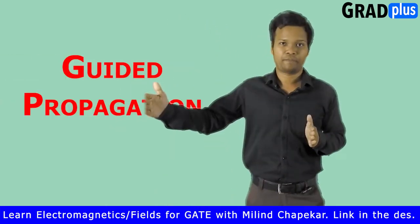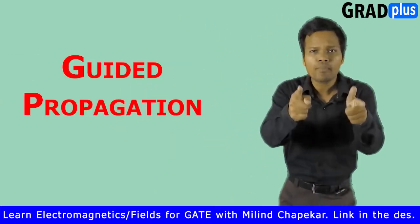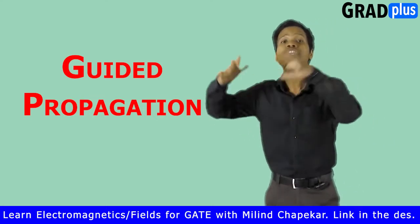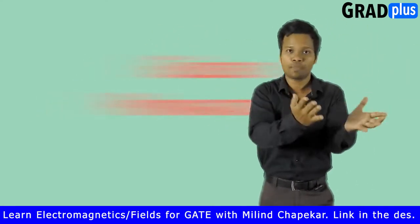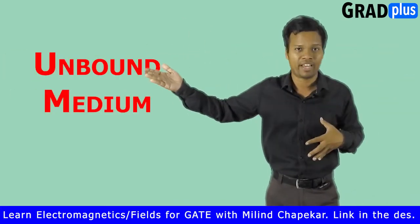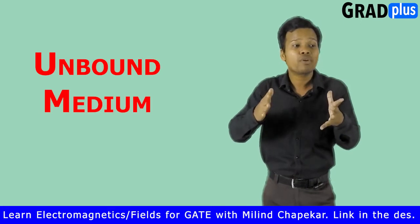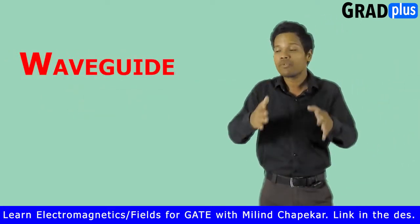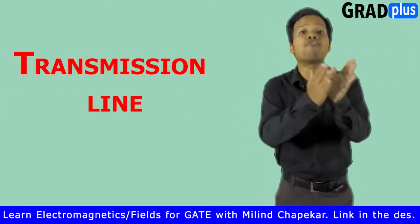Transmission line is one of the important topics in electromagnetics. Transmission line is a form of guided propagation. When electromagnetic wave propagates through free space — an unbounded media — that is a non-guided form of propagation. But when an EM wave travels through a waveguide or across transmission lines, it is a guided form of propagation.